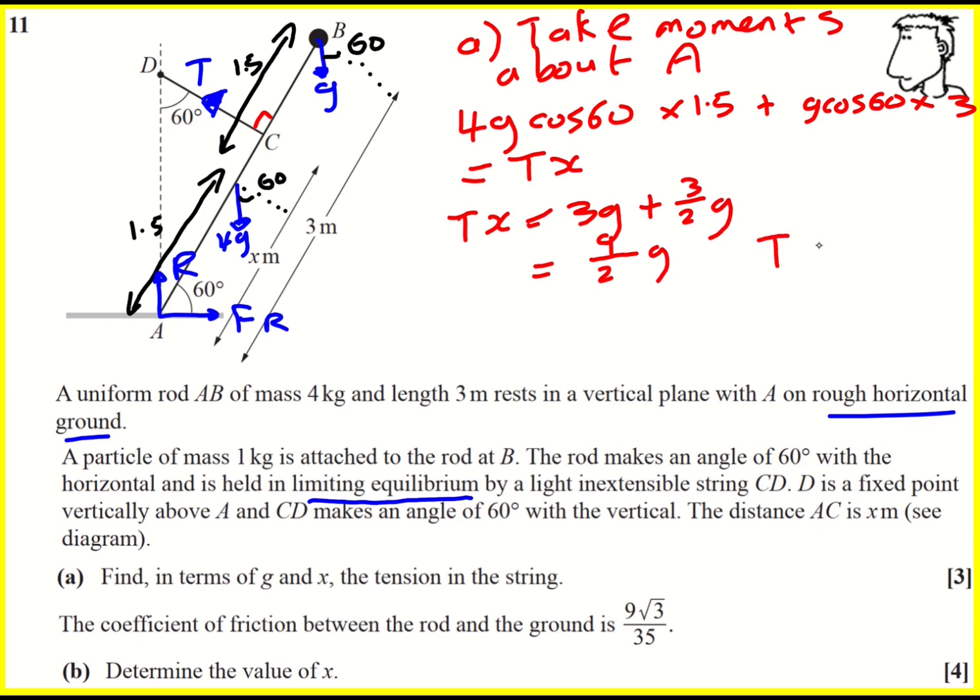And therefore T, I could rewrite it as 9G over 2X. You don't necessarily have to write it as a fraction like that, but it feels quite simplified if we do.